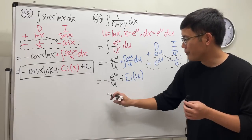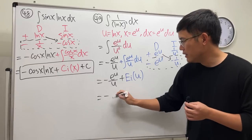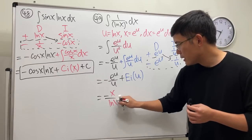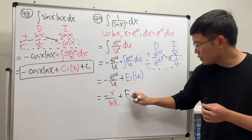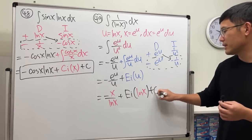And now let's go back to the x. So e to the u is x, so it's negative x over u is ln x, plus exponential integral of u is ln x, plus C.